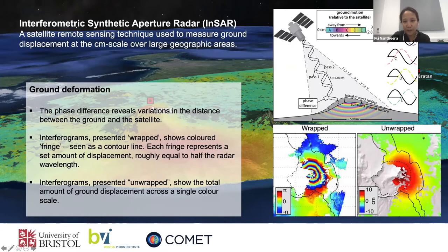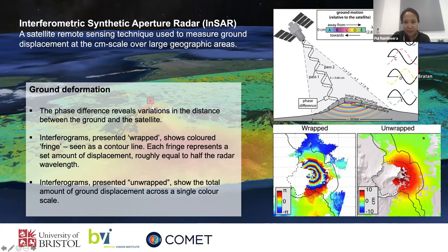We call it an interferogram. So when we unwrap the phase and we know the wavelength of the radar signal, we can compute how much the ground moves in the line of sight of the satellite between two times. The fringes, which you can see in grayscale as lines, are where the phase changes between minus pi and pi. These are actually good features that can be used to distinguish between deformed and non-deformed ground.